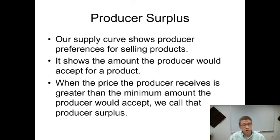Our supply curve shows the producer preferences for selling the products and what it shows is really a willingness to accept, like what's the minimum the producer needs to sell the product. If as a producer you get more than the minimum amount you'd need to sell the product, you'd call that producer surplus.